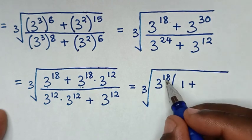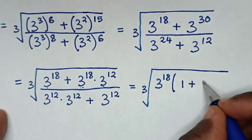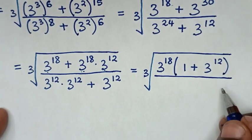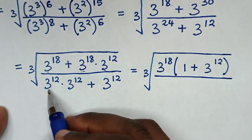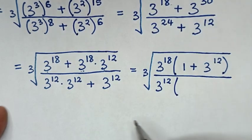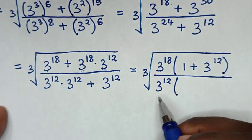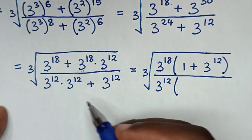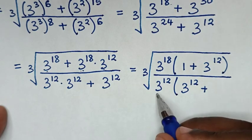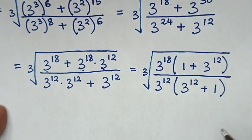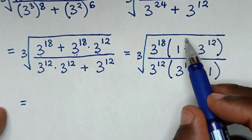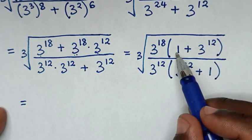Then over: in the denominator 3 power of 12 is common, so take 3 power of 12 out of bracket. Then 3 power of 12 times 3 power of 12 divided by 3 power of 12 is 3 power of 12, then plus 3 power of 12 divided by 3 power of 12 is 1, close bracket.